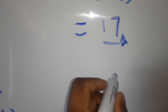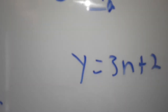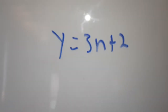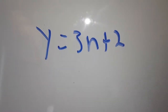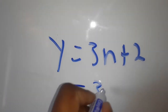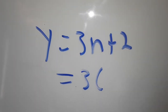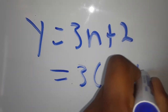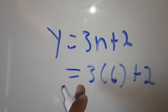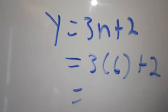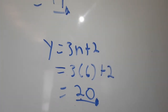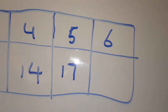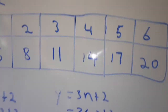Then we have the last one. y is equal to 3n plus 2. If you are getting value from this channel, please hit that subscribe button for more learning content. In place of n we put 6, plus 2. 6 times 3 is 18, plus 2 is 20. So 20 is our answer and we'll put 20 here.